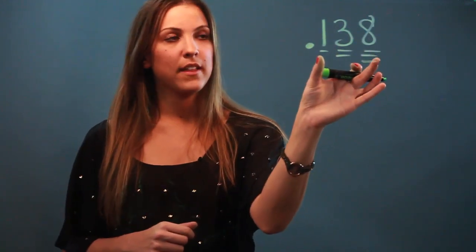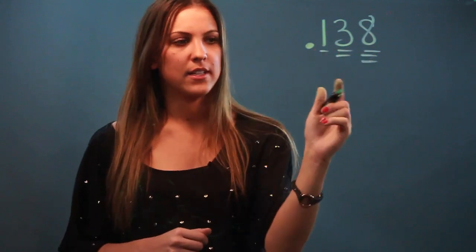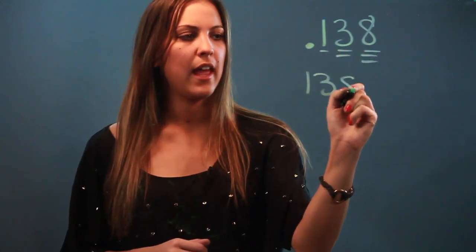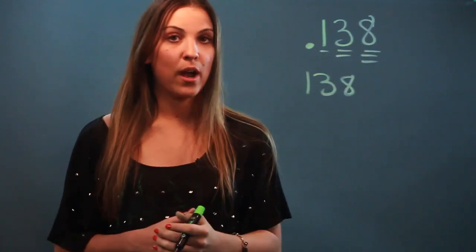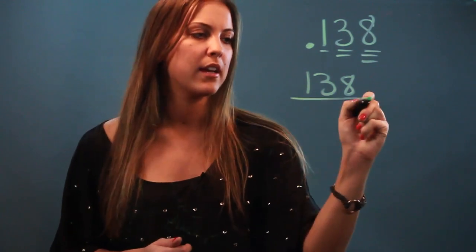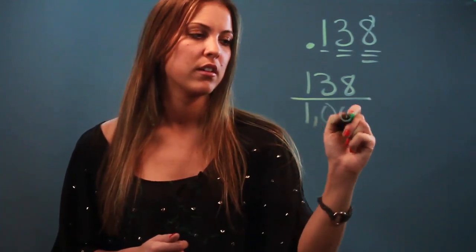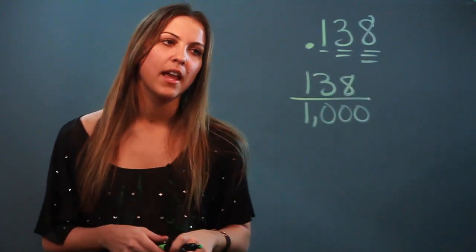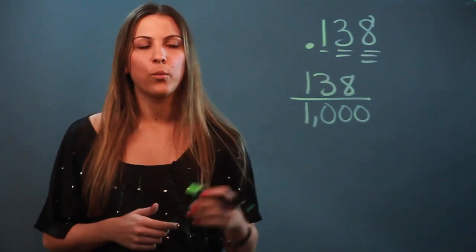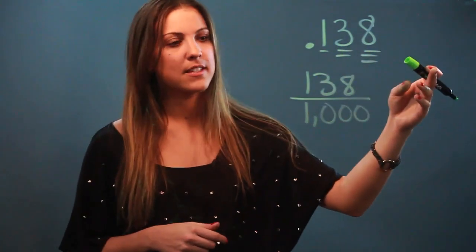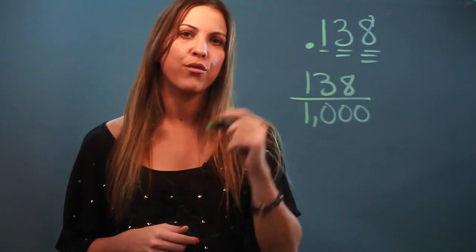So I'm going to take that number that's in the thousandths place, which is all three of these digits — 138 — and because that's the thousandths place, I'm simply going to write it as a fraction over the number 1,000. So 0.138, or 138 thousandths, is written as 138 over 1,000.